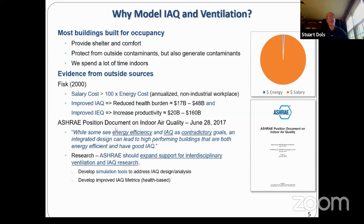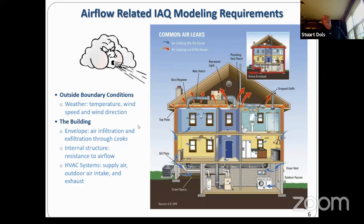We at NIST are developing simulation tools to address design and analysis related to indoor air quality. As energy modelers know, it's relatively easy to show the benefits of reducing energy use, but it's more difficult to show that with relationship to indoor air quality. We need health-based metrics to improve that and simplify our ability to compare against metrics when we run simulations. In terms of outside boundary conditions related to airflow, the modeling tools should capture the weather — namely temperature, wind speed, and wind direction — and the building envelope.